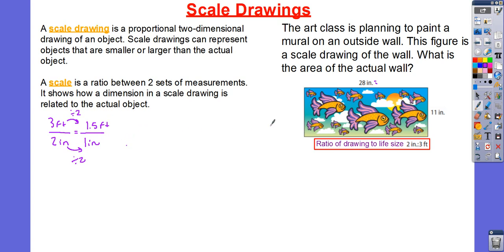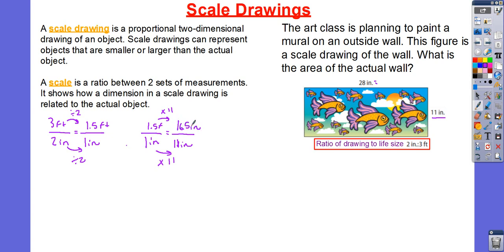Let's go ahead and try that with our width. Our width is going to be 11 inches. We have one inch equal to 1.5 feet. We have 11 inches — we need to figure out how many feet that will be in real life. I'm going to multiply by 11. 1.5 multiplied by 11 is going to give me 16.5 feet. Feet to feet, inches to inches. So, 11 inches is equivalent to 16.5 feet in real life.